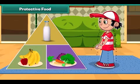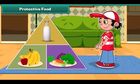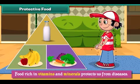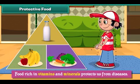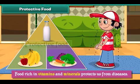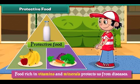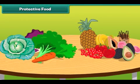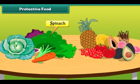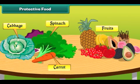Food rich in vitamins and minerals protects us from diseases. Therefore it is called protective food. Green leafy vegetables such as spinach and cabbage, carrots and fruits have lots of vitamins and minerals.